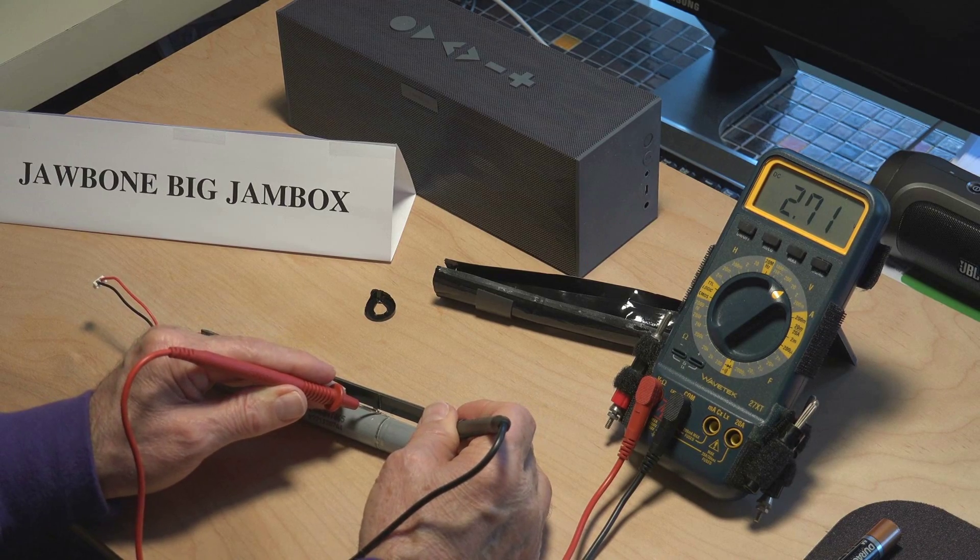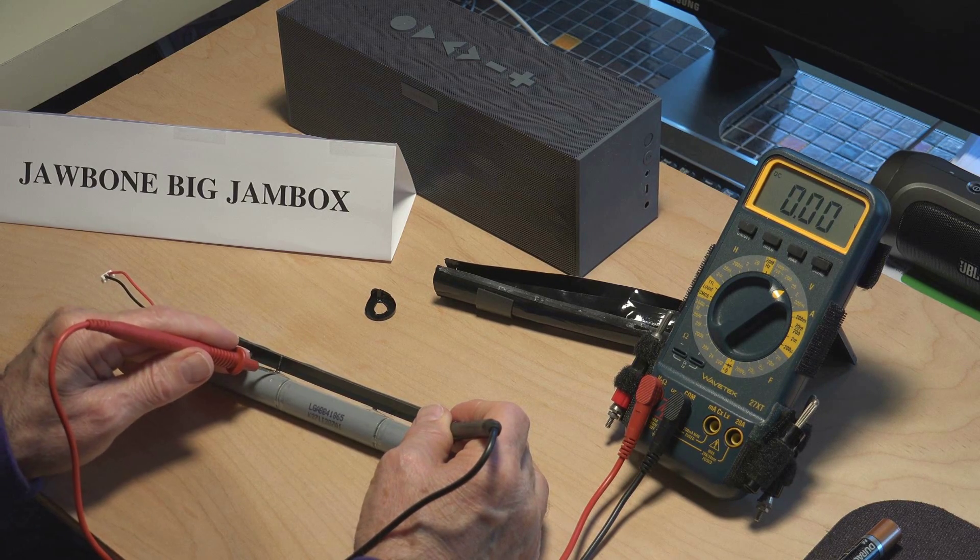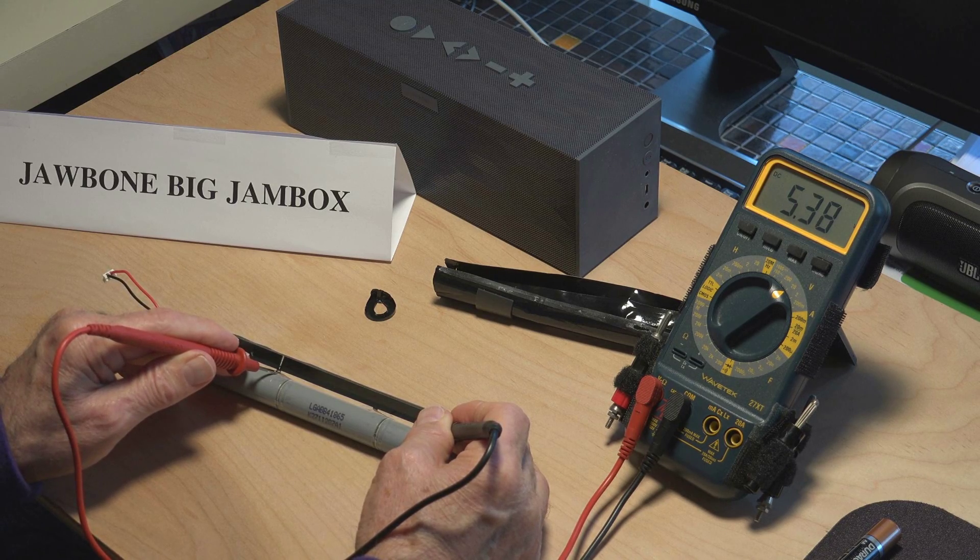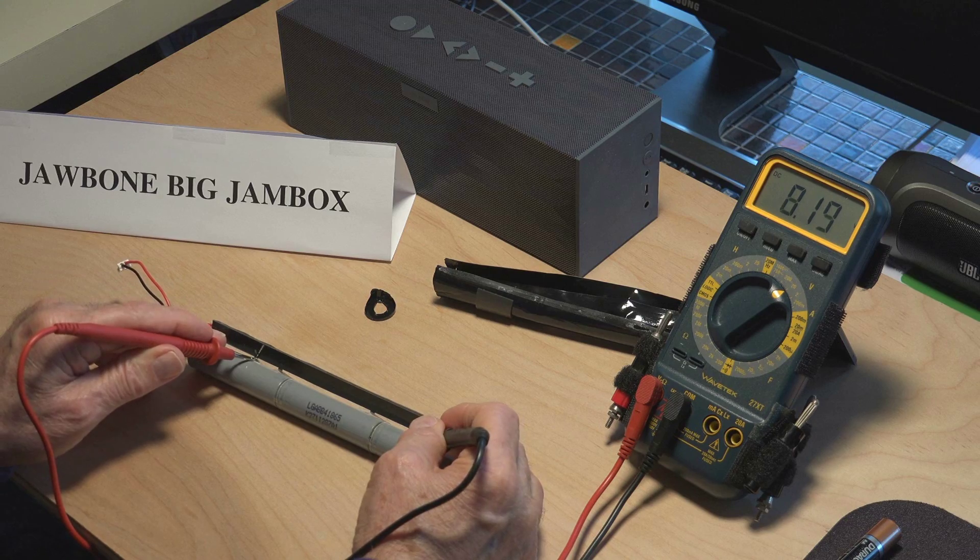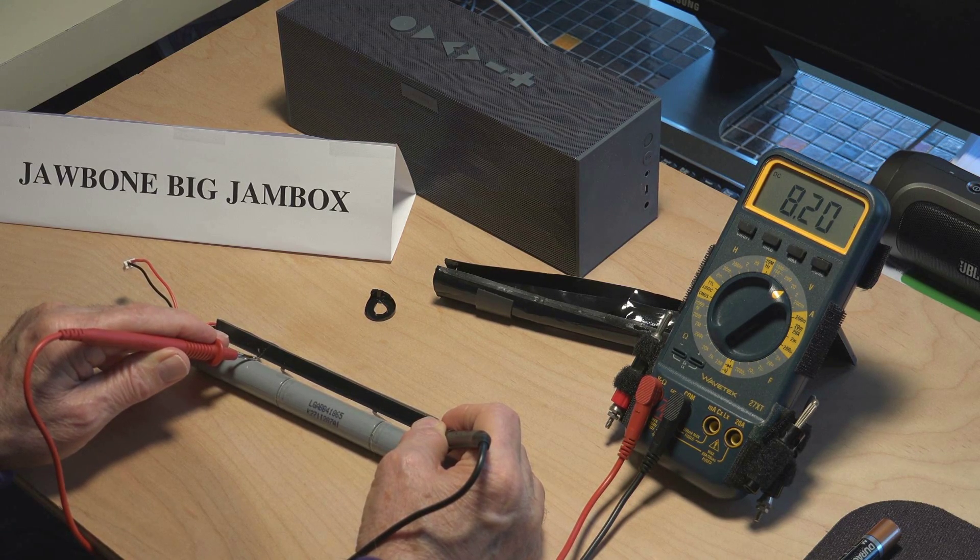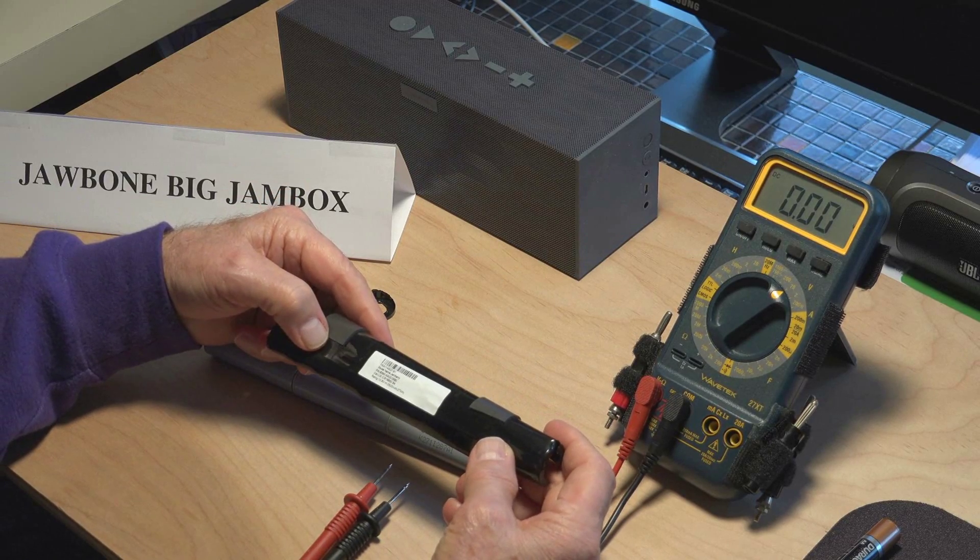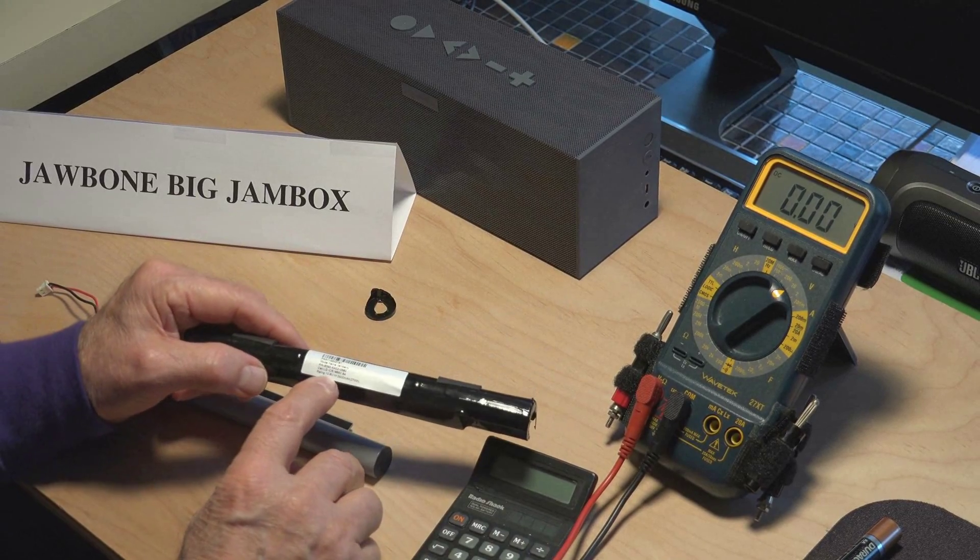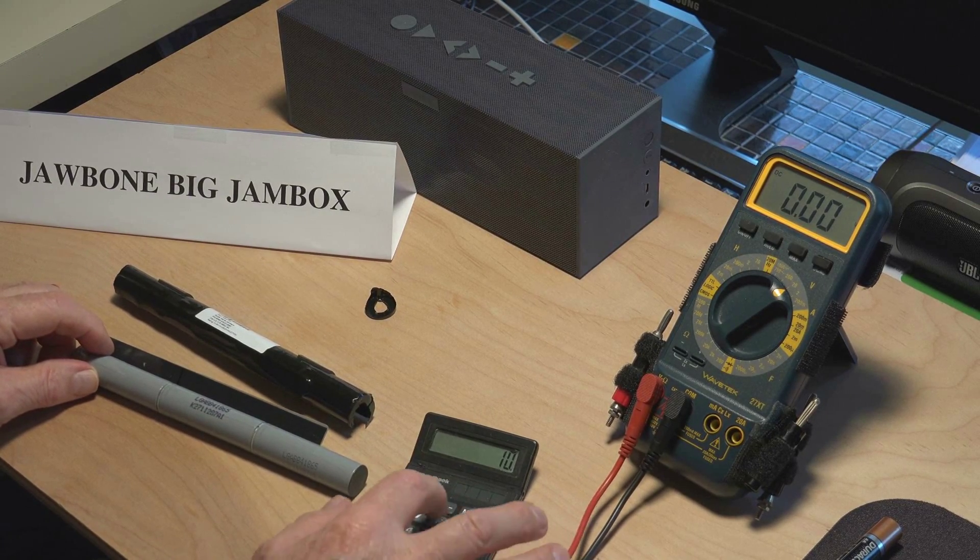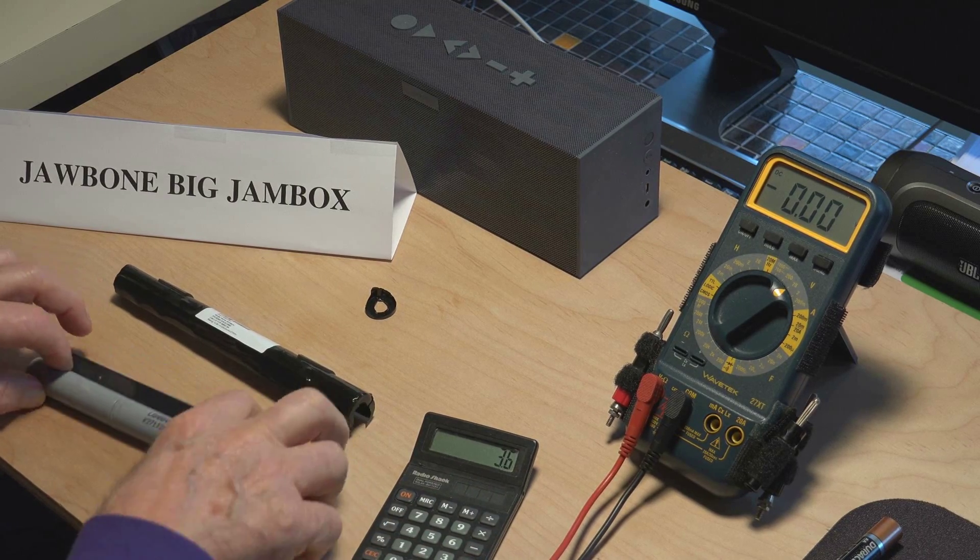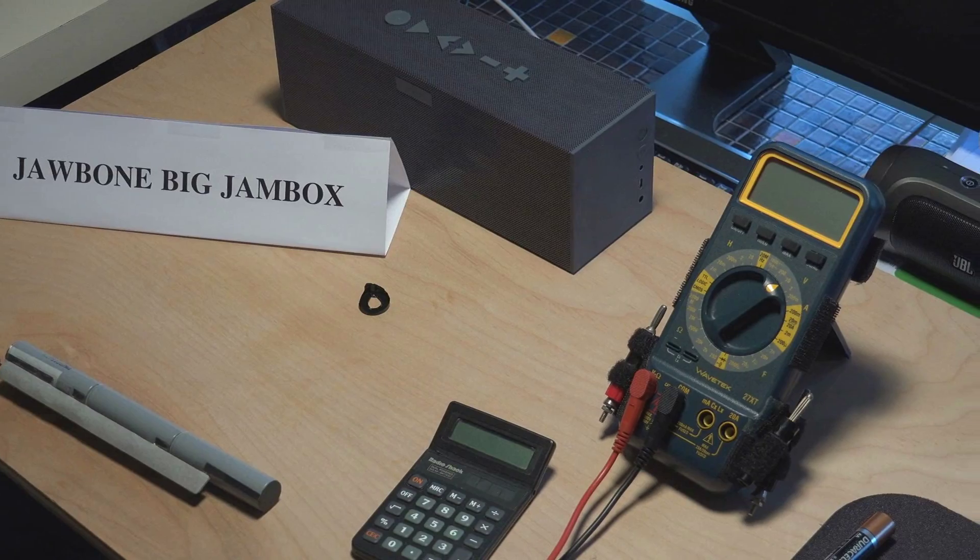If we measure the voltage of one cell, it's 2.71 volts. If we measure two cells, it's about 5.4 volts. If we measure three cells, we got 8.2 volts. According to the wrapper, it says it needs 10.8 volts. If we take the 10.8 volts and divide it by 3, it comes out to each cell should be 3.6 volts. And we only have 2.7.